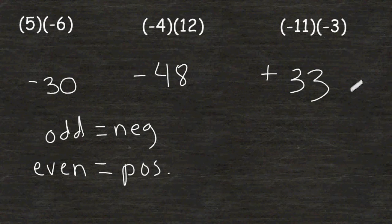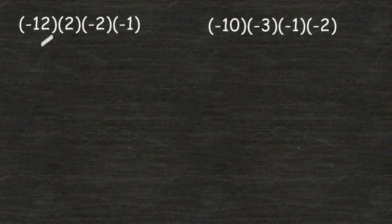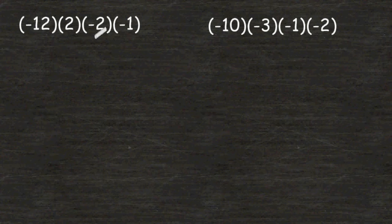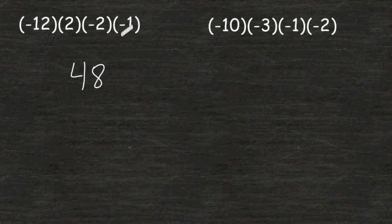Now let's look at some more examples. This time we are multiplying four numbers together. Let's start by multiplying their absolute values: 12 times 2 is 24, 24 times 2 is 48, and 48 times 1 is still 48. Now let's count the amount of negatives within the problem. We have 1, 2, 3 negatives, which is an odd number. And if you have an odd number of negatives within the problem, your answer will be negative.